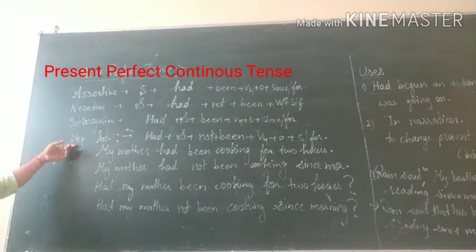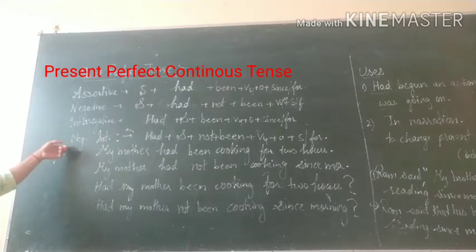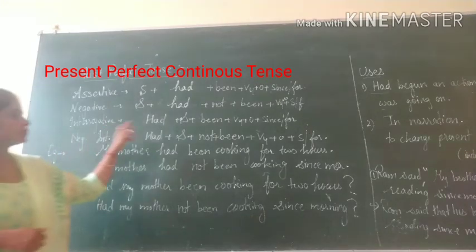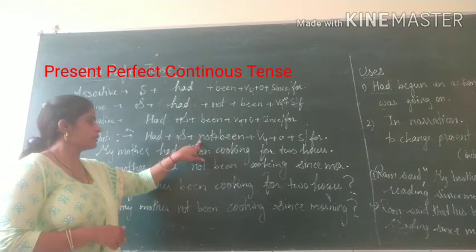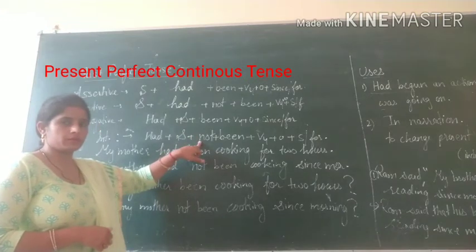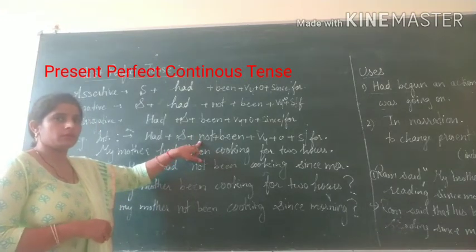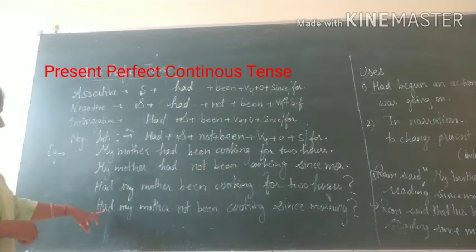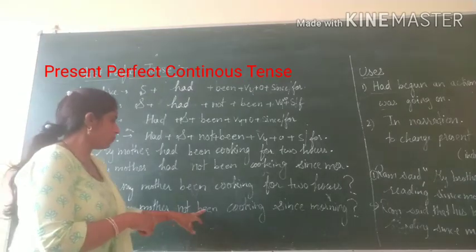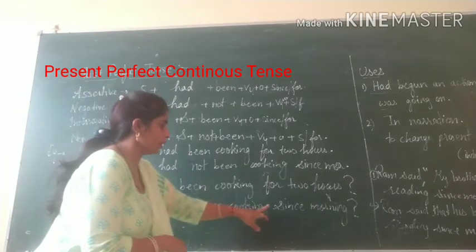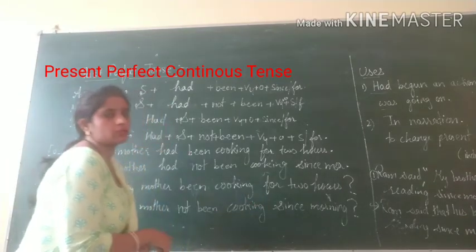Next is the negative interrogative. To make a negative interrogative, we use 'not' after the subject. For example: 'Had my mother not been cooking since morning?'